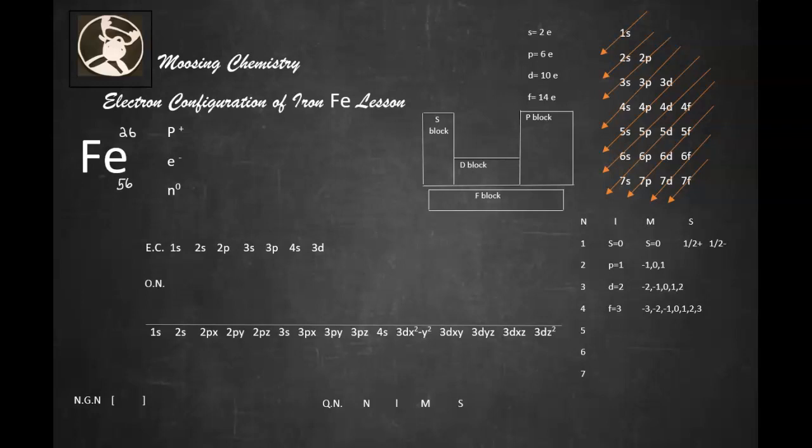So since the atomic number is 26, that means there's 26 protons. And since it's electrically neutral, it would have to be 26 electrons.